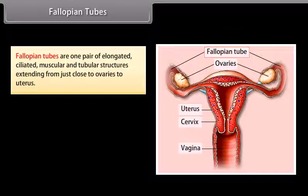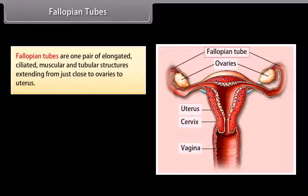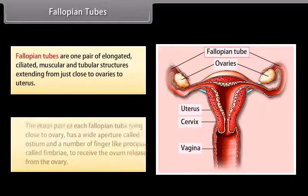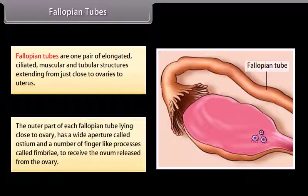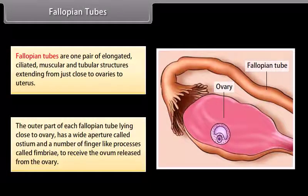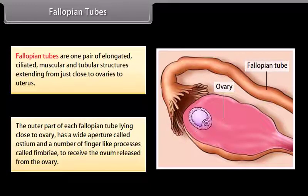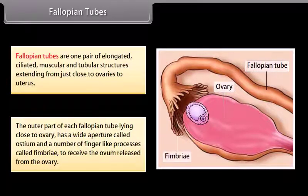Fallopian tubes are one pair of elongated, ciliated, muscular and tubular structures extending from close to the ovaries to the uterus. The outer part of each fallopian tube, lying close to the ovary, has a wide aperture called the ostium and a number of finger-like processes called fimbriae, which receive the ovum released from the ovary.